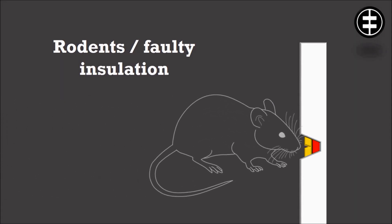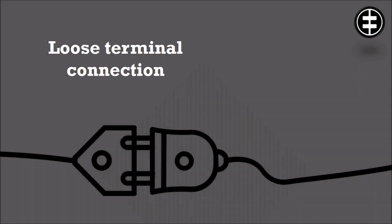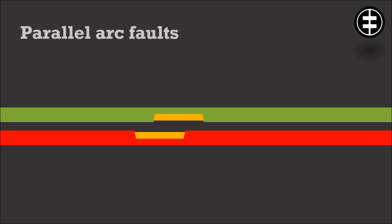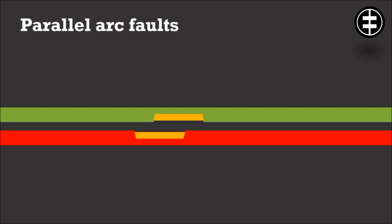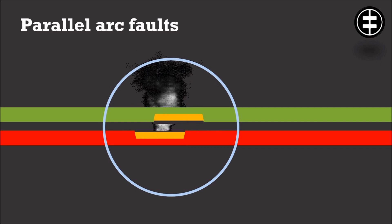Rodents, faulty insulation, and loose terminal connections are all factors which could lead to one of three different types of electrical arc faults. Series arc faults is the first type — these occur between two parts of the same damaged conductor. Parallel arc faults is the second type — these happen between two different conductors with different voltage levels when the insulation is damaged.